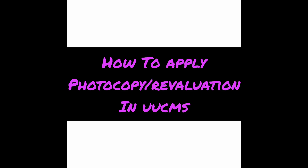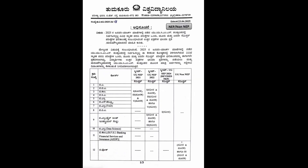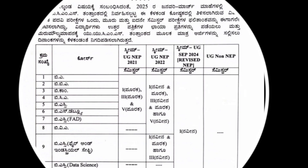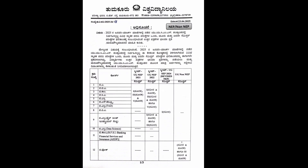In this video, we will demonstrate how to apply photocopy or re-evaluation in the UUCMS student portal. Thumbkur University announced the re-evaluation or photocopy notification on 23 April 2025 for the examination which was held on January-February 2025.